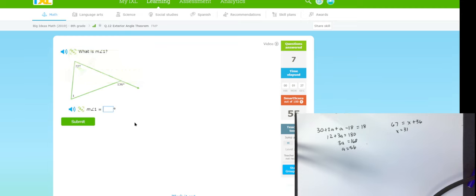This is a subtraction problem. So anytime that you're finding one of the insides that's not adjacent, you're just going to subtract from the outside. So I'm going to do 136 minus 72. 136 minus 72. And that gives me 64.